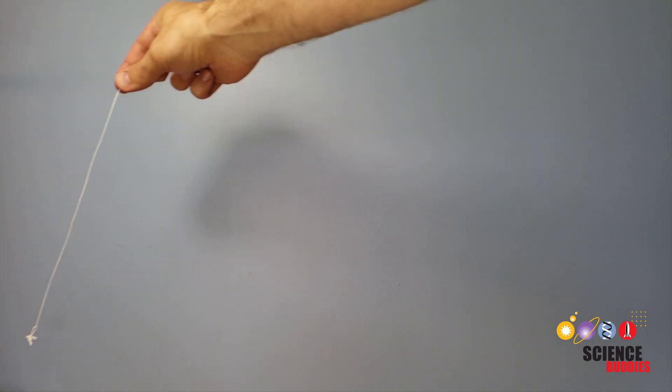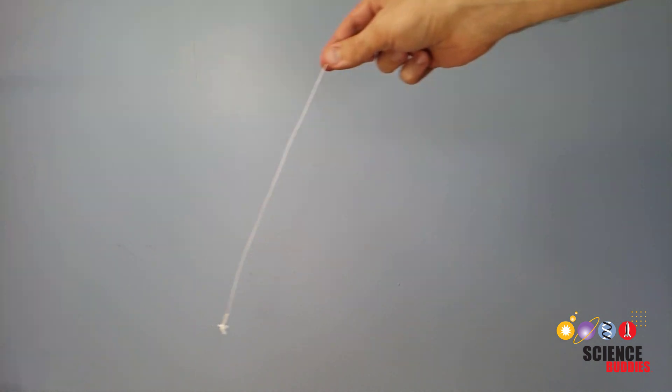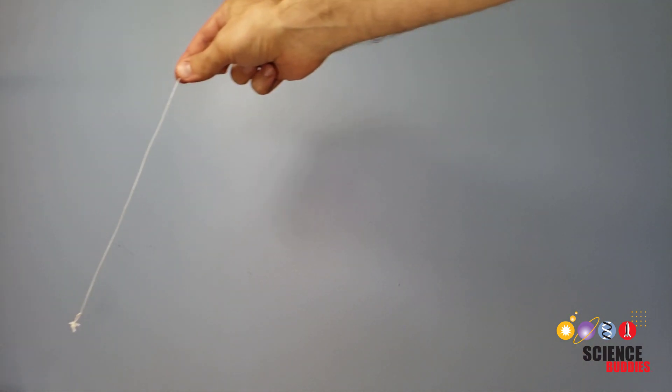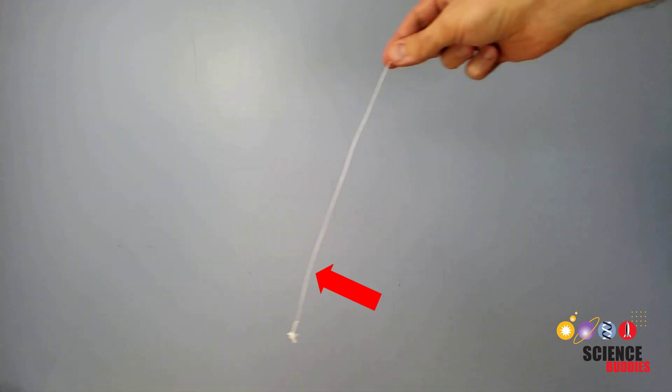When we add the knot, the extra weight at the end of the string causes it to curve downward. That's answer D from the original question. This one's a little harder to see, but if I pause the video, you can see the bend in the string here.